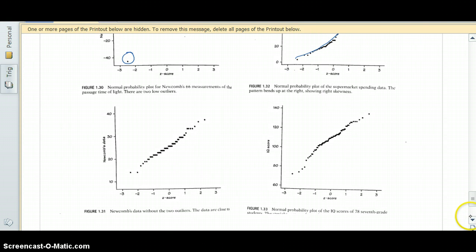Okay, now the next one is Newcomb's data without the two outliers, and we can see that it's pretty close to a straight line. So we would say that this portion of the data was approximately normal.